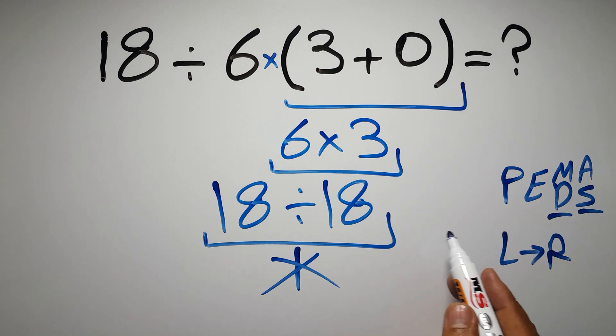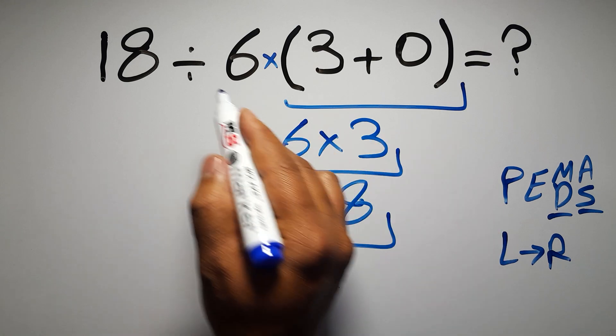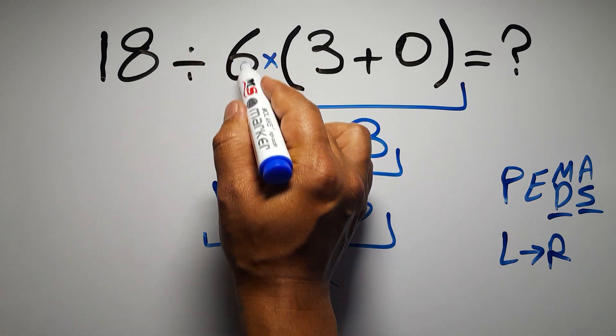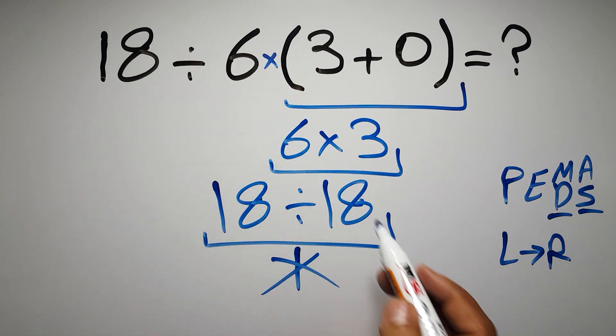Now, according to the PEMDAS, first we have to do this parentheses, then this division, and finally this multiplication. If we do this multiplication before this division, it is wrong.